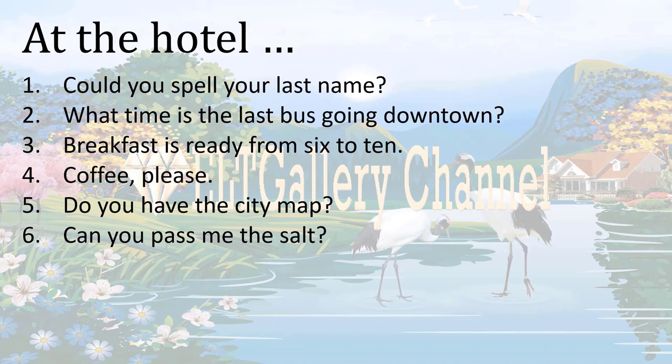'Breakfast is ready from six to ten' — here the sentence gives information about the availability of breakfast. 'Coffee, please' is different from the previous three sentences. In the previous three sentences, all the sentences are about information, but now it's not about information anymore — it's about an object. So here the speaker asks for coffee.